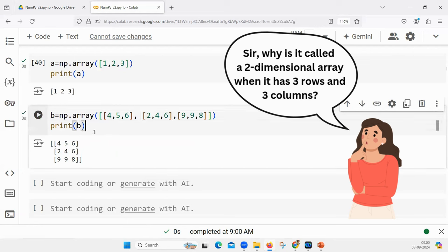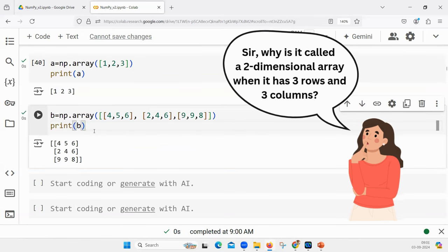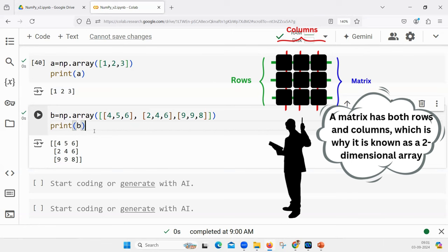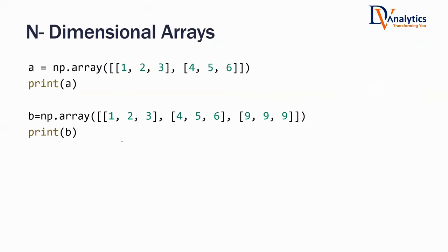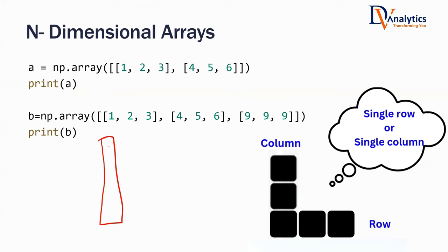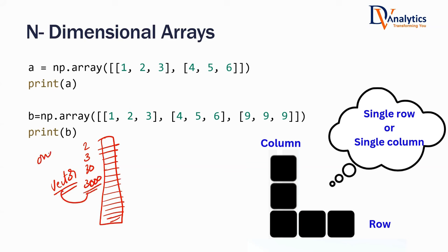Why is it called a two-dimensional array and not a three-dimensional array if it has three rows? Think about it in terms of a matrix. Dimension one is rows, dimension two is columns — there is no other dimension. Whether you have two rows, four rows, or 3 million rows, this is still called a two-dimensional array. Similarly, a one-dimensional array is also called a vector. Whether you have two elements, three elements, or 3 million elements, it is still a one-dimensional array.